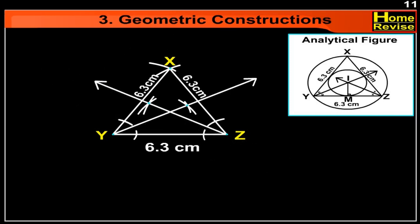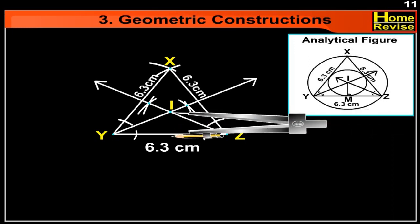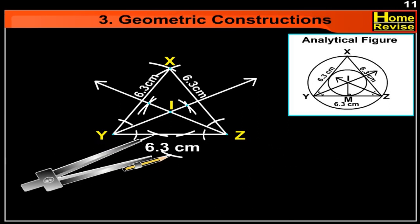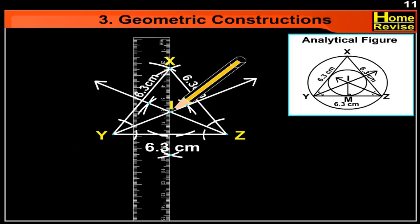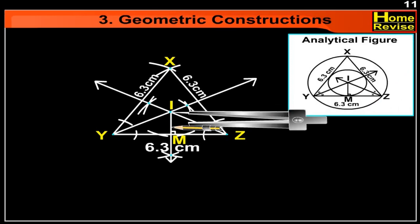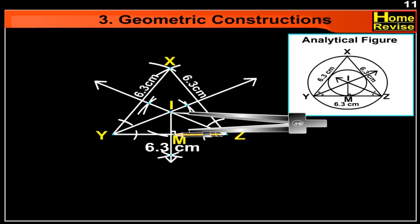These two angle bisectors intersect at point I. Let us draw a perpendicular from I to the side YZ. Let us name the point of intersection of the perpendicular and side YZ as M. Using I as the center and IM as the radius, let us draw a circle. This is the incircle of triangle XYZ.